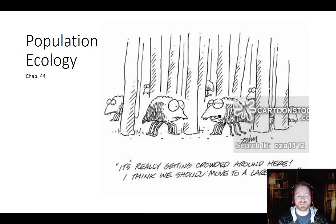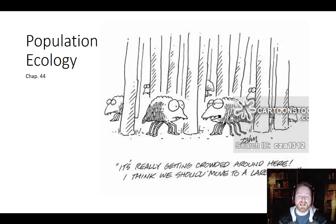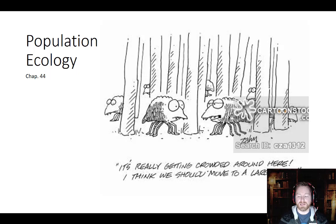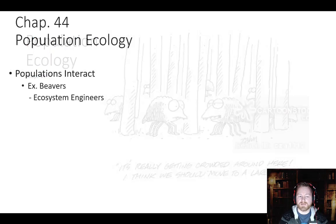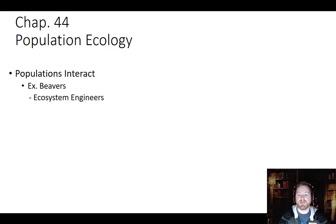Hey gang, and welcome back to another exciting episode of Biology One Online. Today we're going to talk about population ecology. If you remember back from Biology One, we talked a little bit about the differences between a population and the community. A population is all of one species living in the same area. So what are some examples of species living in an area that we may want to study and learn about their ecology?